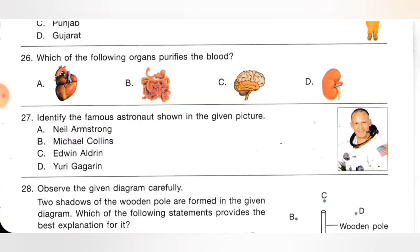Twenty-seventh one: identify the famous astronaut shown in the given picture. Option A: Neil Armstrong, B: Michael Collins, C: Edwin Aldrin, D: Yuri Gagarin. The given astronaut is Edwin Aldrin. Option C is the correct answer.